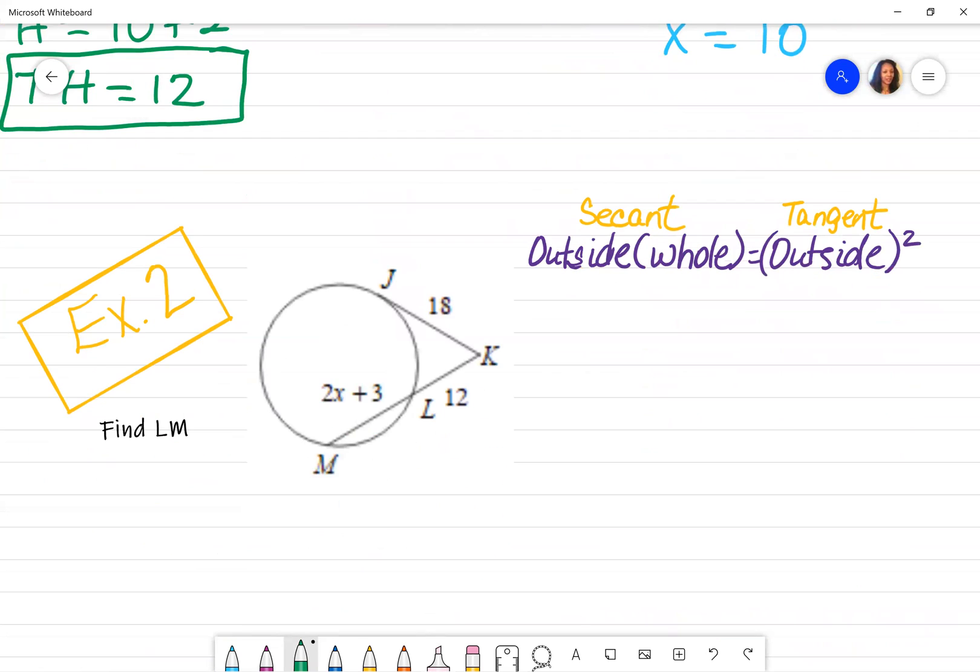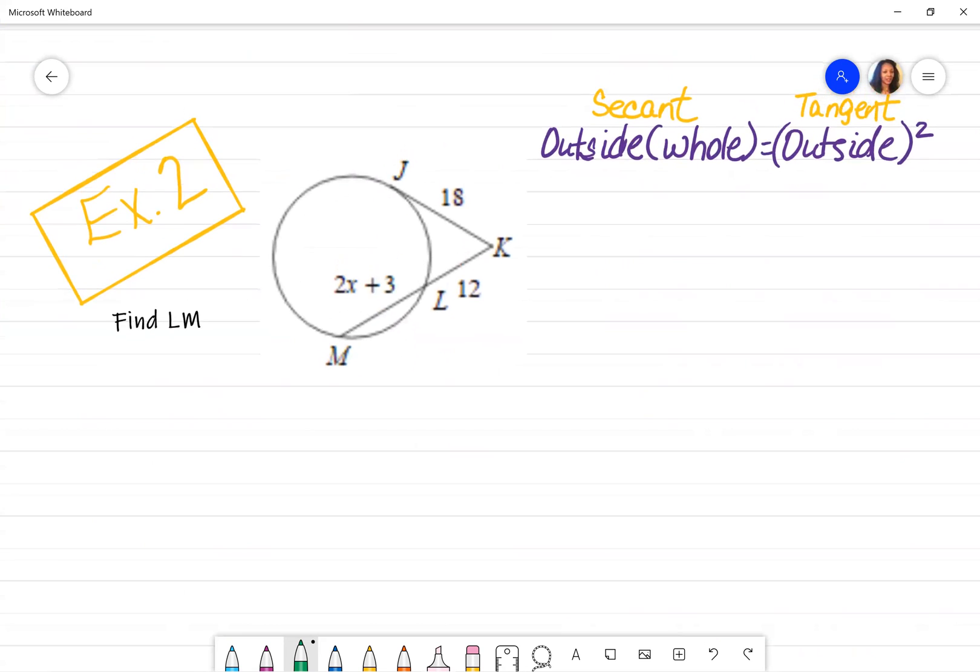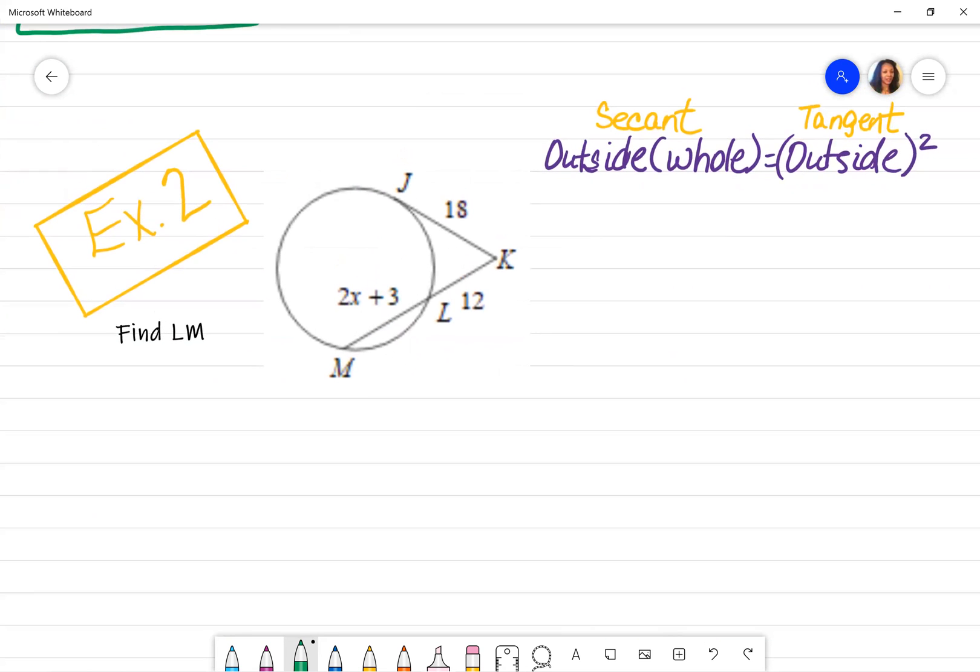For the next one, if I'm looking at what's given here, I see that I have a secant, which is the one that goes through the circle. And I also have a tangent where it stops at one point on the edge of the circle. So I'm just going to follow my formula. And it does not matter which one I use first. I just happened to set up my secant first.